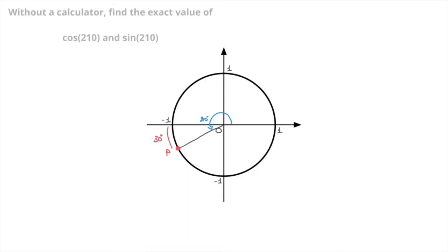We also point out that by definition, point P has coordinates that are equal to both cosine of 210 and sine of 210. In other words, the horizontal coordinate of P is cosine of 210, and the vertical coordinate of point P is sine of 210. Now that we've established all of that,